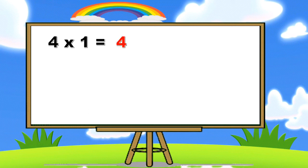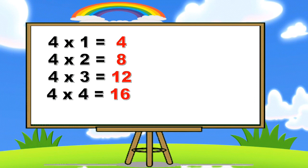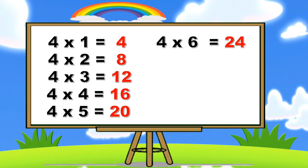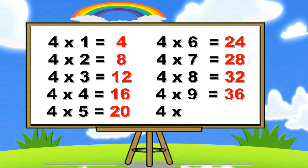Four ones are four. Four twos are eight. Four threes are twelve. Four fours are sixteen. Four fives are twenty. Four sixes are twenty-four. Four sevens are twenty-eight. Four eights are thirty-two. Four nines are thirty-six. Four tens are forty.